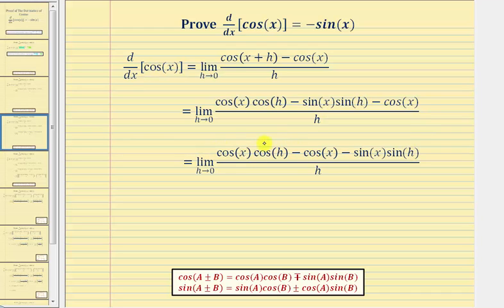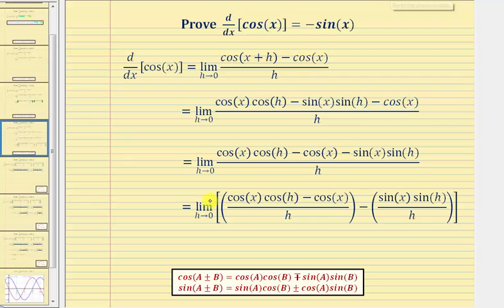Next we'll write this single fraction as a difference of two fractions with the denominator h. These two terms will be the numerator of the first fraction and this part will be the numerator of the second fraction. So now we have the limit as h approaches zero of the quantity cosine x times cosine h minus cosine x divided by h, minus sine x sine h divided by h.